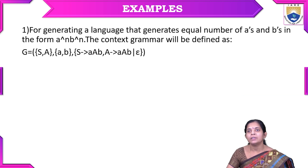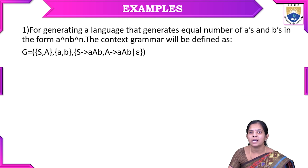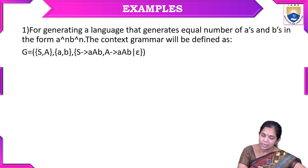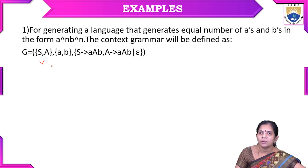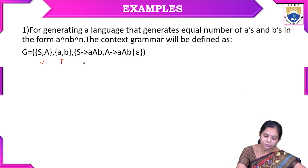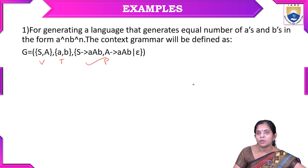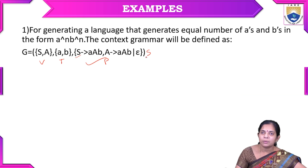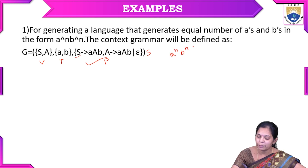Let me explain the grammar further with examples. Here is an example for generating a language with an equal number of A's and B's, in the form A^N B^N. The context-free grammar is denoted by a four-tuple: V is the non-terminal, T contains the terminal symbols in small letters, P contains the production rules, and S is the start state.